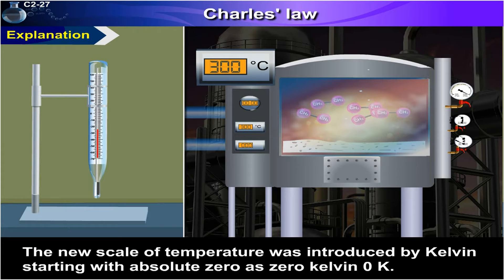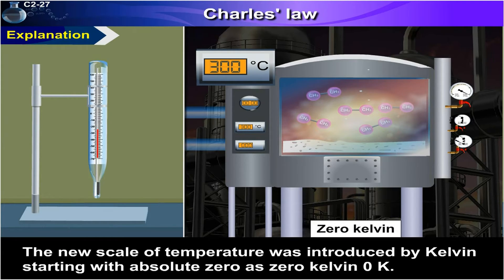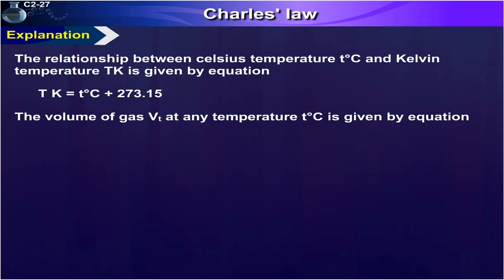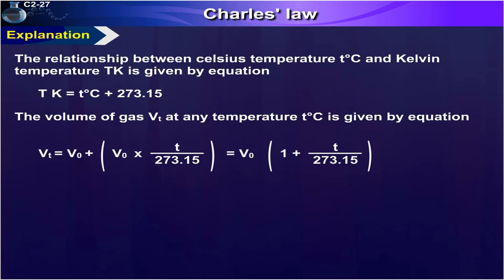A new scale of temperature was introduced by Kelvin, starting with absolute zero as zero Kelvin or 0 K. The relationship between Celsius temperature T°C and Kelvin temperature T K is given by: T K = T°C + 273.15. The volume of gas Vₜ at any temperature T degrees Celsius is given by: Vₜ = V₀ + V₀ × (T/273.15) = V₀ × (1 + T/273.15).